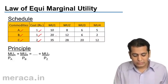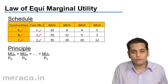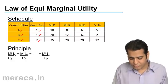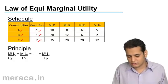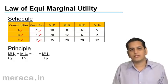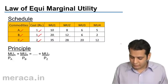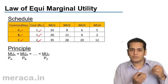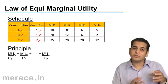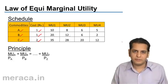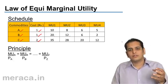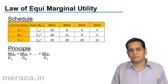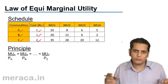For Commodity B, the first unit gives a satisfaction level of 20, the second unit gives 12, the third unit gives 6, while the fourth unit gives only 2. The consumer has a limited income to spend on both commodities, and within his income he has to allocate spending on both Commodity A and Commodity B.